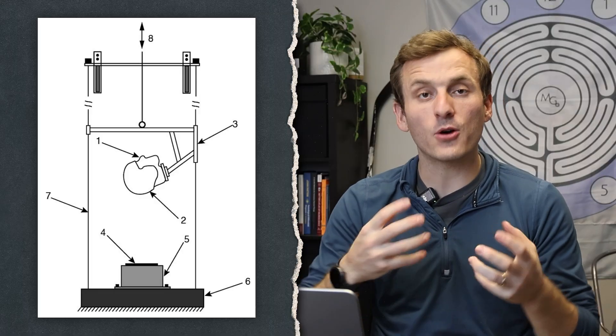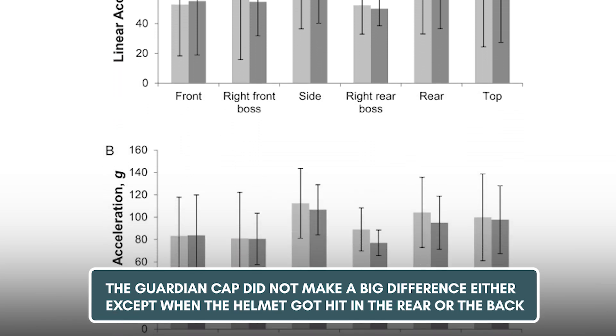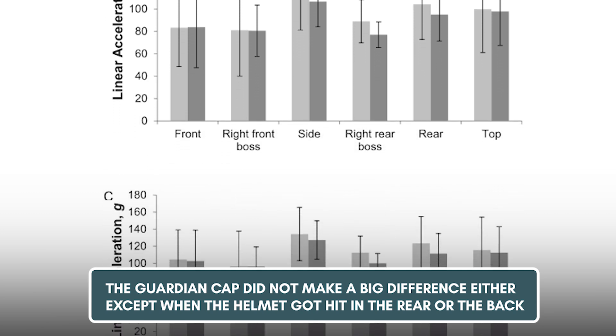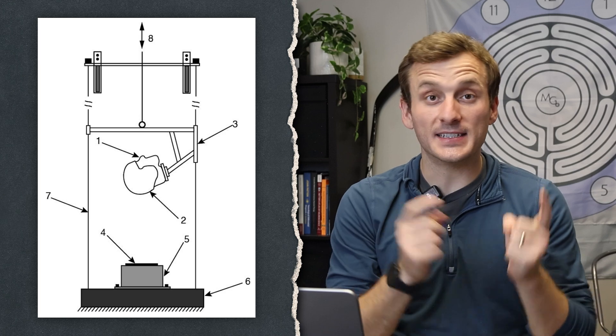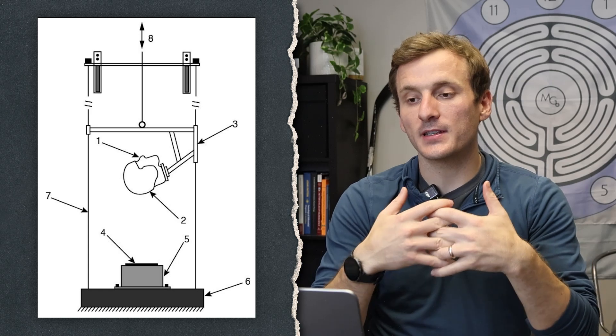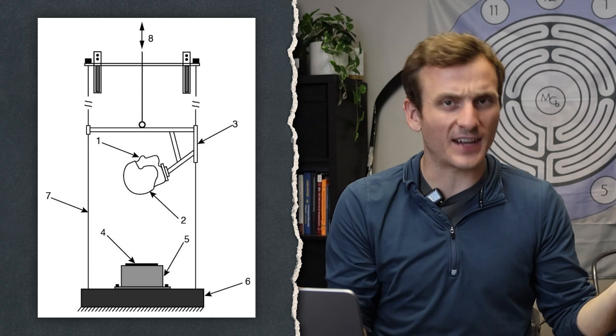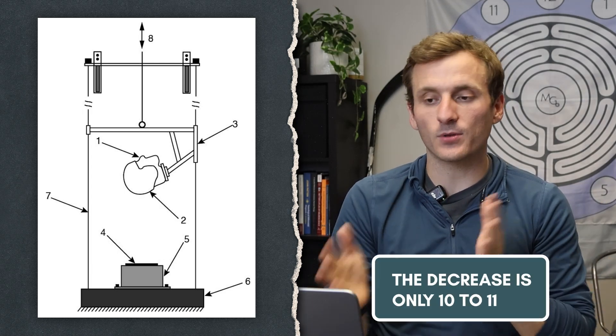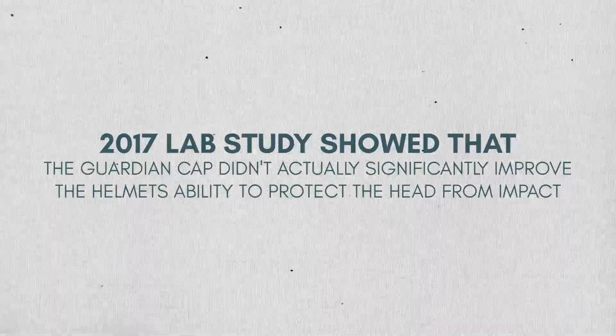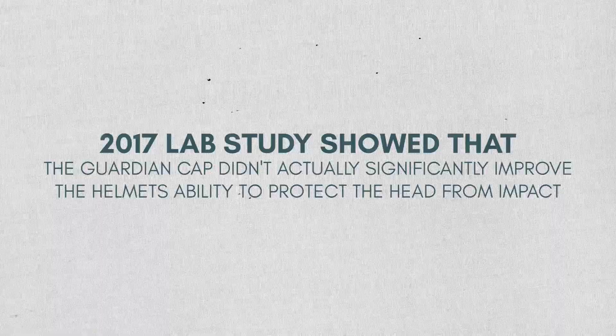They also looked at peak acceleration, which measures how quickly the helmet moves when it's hit. And again, the guardian cap did not make a big difference here either, except in two positions. When the helmet got hit in the rear, or the back, or when it got hit kind of on the back side, or the rear boss. So, peak acceleration did decrease in the rear and the rear boss positions. But, womp womp, these are actually the least common sites for players to be hit playing football. So, we reduced force, but where players don't actually ever get hit. And the decrease is only 10 to 11 percent. So, we still haven't found that 33 percent number, but we're only one study in. Overall, the results of the 2017 lab study showed that the guardian cap didn't actually significantly improve the helmet's ability to protect the head from impact.